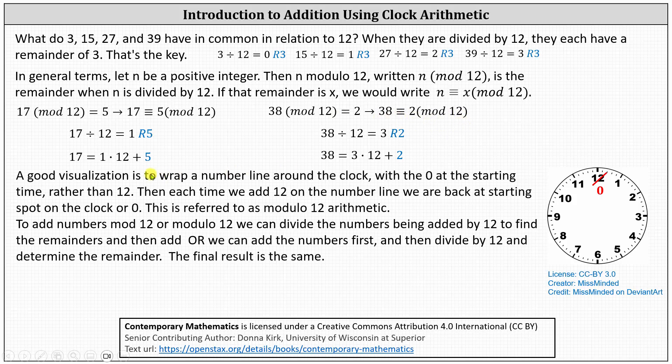A good visualization is to wrap a number line around the clock with the 0 at the starting time rather than 12, as shown here on the right. Then each time we add 12 on the number line, we are back at the starting spot 0 on the clock. This is referred to as modulo 12 arithmetic.